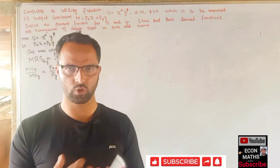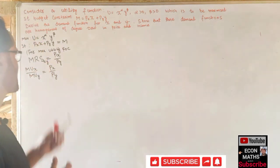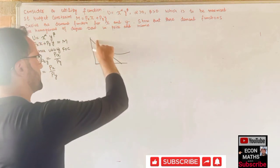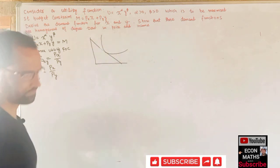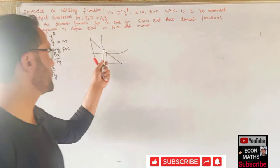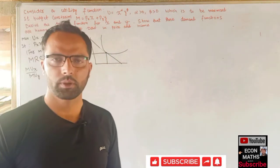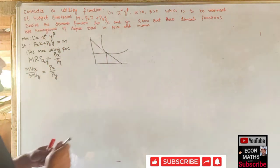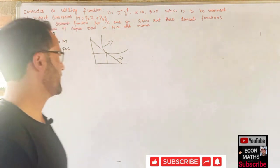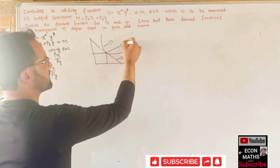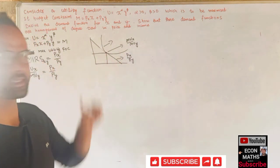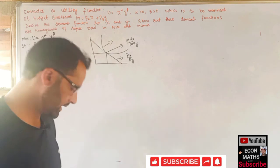Graphically, this means that if we have the Cobb-Douglas utility function and the budget constraint, the tangency condition requires that the highest attainable indifference curve should be tangent to the budget line. That point is the optimal bundle. This requires that the slope of the budget line equals the slope of the indifference curve, meaning Px/Py equals MU_x/MU_y.